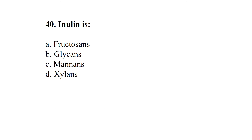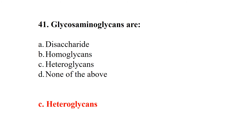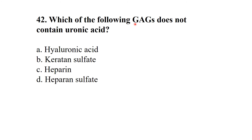Inulin is a fructose-based polysaccharide. Glycosaminoglycans, also known as GAGs, are heteroglycans.